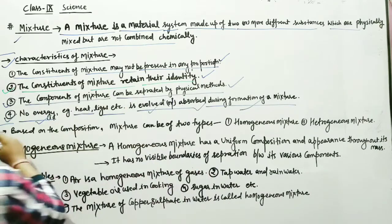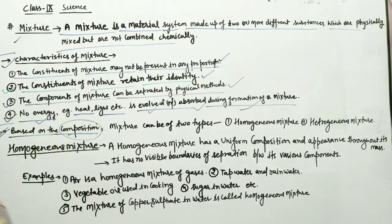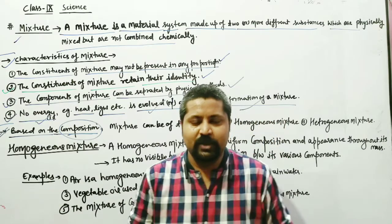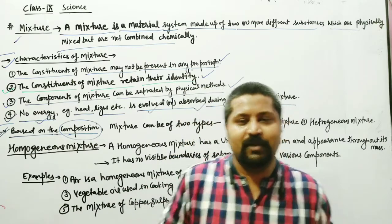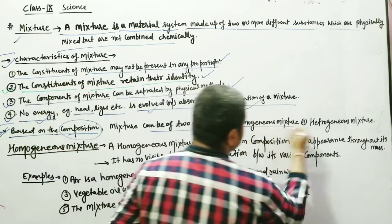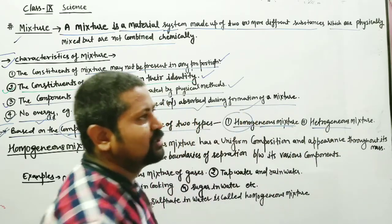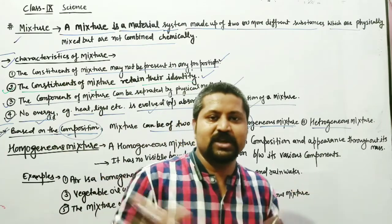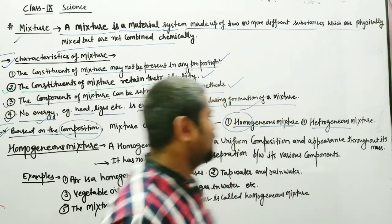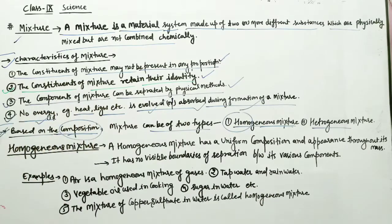Based on composition, mixtures are of two types: homogeneous mixture and heterogeneous mixture. Homogeneous means sameness — when two substances are mixed, they mix completely and become uniform throughout. Heterogeneous means they are different — the components remain distinct.